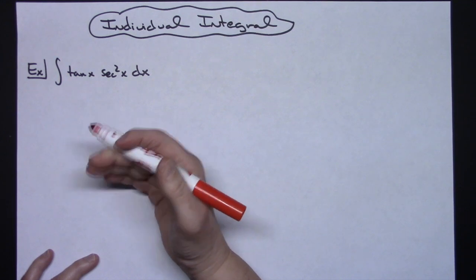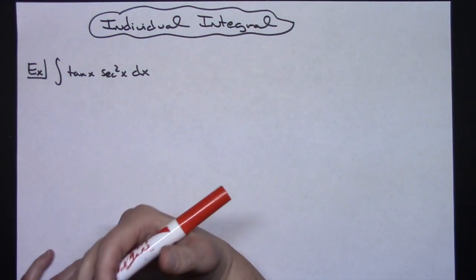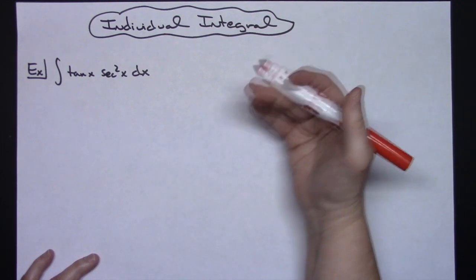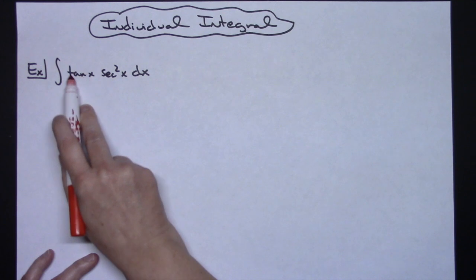For starters, you kind of want to think about what am I going to let u be? It needs to be something that when I take the derivative of it, then something's going to cancel out. So if you know your derivatives really well, you're going to be able to look at this and go...